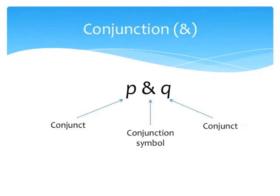More on the connective. In the last mini-lecture, we studied the conjunction, represented by the ampersand symbol, which corresponds in English, more or less, to AND. This connective takes any two sentences and joins them, and each of the component sentences is called a conjunct.